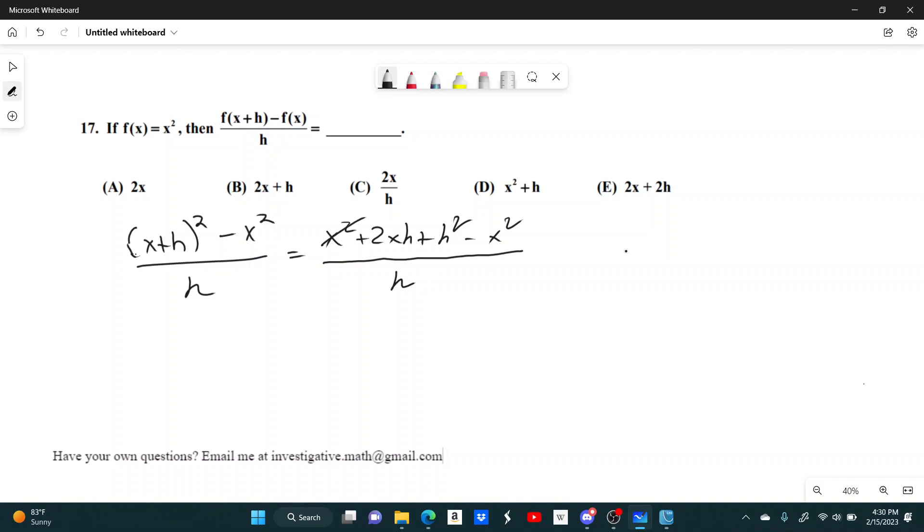We have some stuff that cancels out, so this x squared and the minus x squared will cancel out, and then we have 2xh plus h squared divided by h, so we can cancel out an h. So in the end, 2xh divided by h gives just 2x, h squared divided by h just gives h, and this is what you're left with. That's answer choice B.